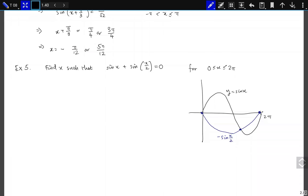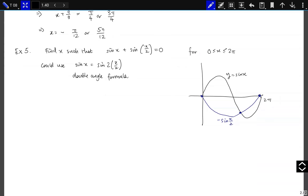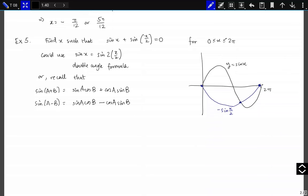And you see that there should be three solutions in this range. Sorry for the blip. And you could use sin x is equal to sin of 2 times x/2. So that's the double angle formula for the sine. Or we're going to use something a little bit different. So away from the beginning, we had that sin(a + b) = sin a cos b + cos a sin b.